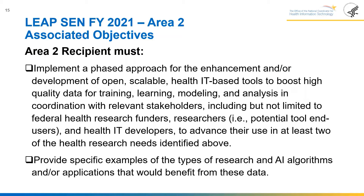For area two, the recipient must implement a phased approach for the enhancement and development of open, scalable, health IT-based tools to boost high-quality data for training, learning, modeling, and analysis, in coordination with relevant stakeholders including federal health research funders, researchers as potential tool end users, and health IT developers, to advance their use in at least two of the identified health research needs. Recipients should provide specific examples of the types of research and AI algorithms or applications that would benefit from these data.